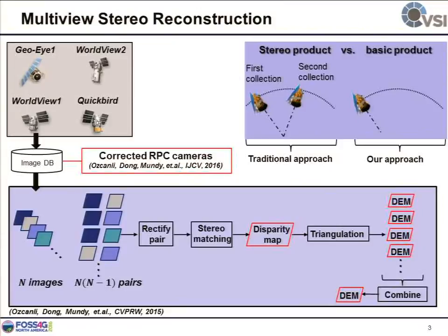Once we have all the geo-corrected images from all possible satellites, we use multi-view stereo reconstruction. Meaning if we have n geo-corrected images, we randomly pick any two of them to do triangulation and stereo reconstruction to generate one DSM product. Because we have n images, we roughly have n-squared DSM products, and since all the images are aligned perfectly well, we simply combine all the DSM products to produce our final DSM image.